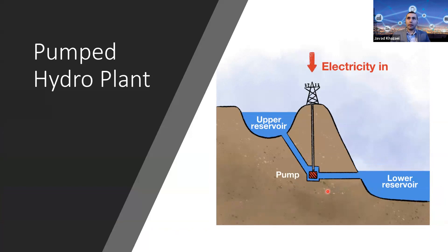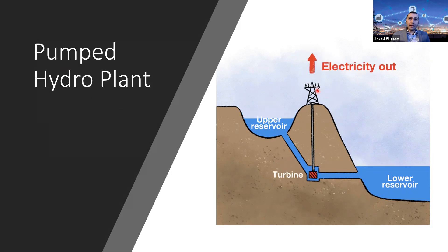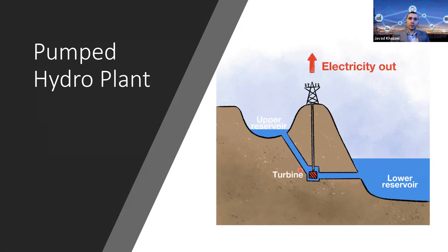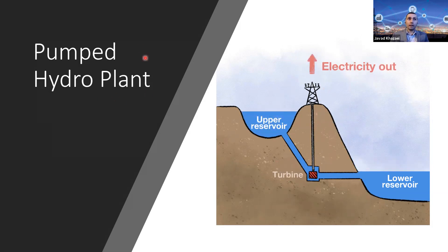Another hydro application is pumped hydro storage, using the elevation difference between an upper and lower reservoir. During the day, electricity pumps water from the lower to the upper reservoir. During the night when electricity is needed, the process reverses: water flows from the upper to the lower reservoir, rotating the pump shaft — now acting as a turbine — generating electricity sent to the system. This is a two-way energy system: consuming power one way, generating it the other. However, it is also slow because of its reliance on water flow.